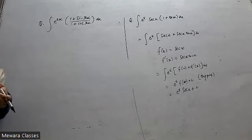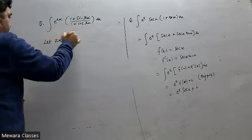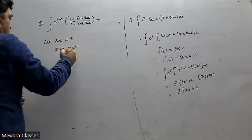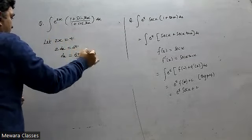Now here in place of e to the power x, we have e to the power 2x. So what you have to do is assume 2x equals t. Then dx becomes dt by 2.